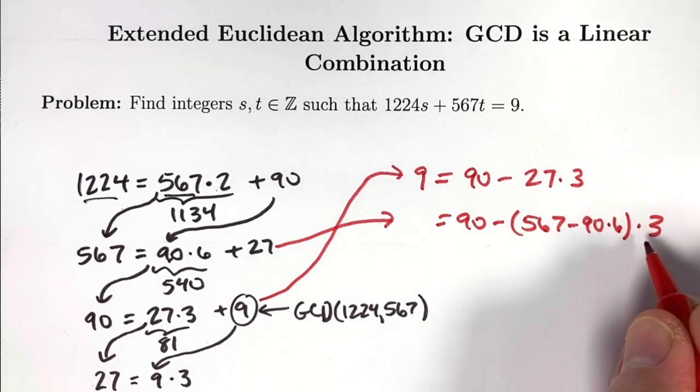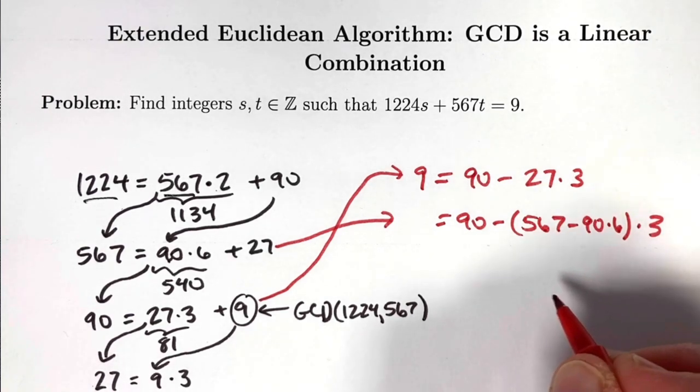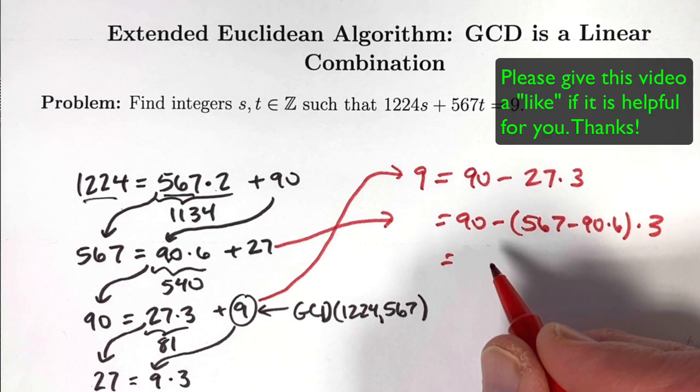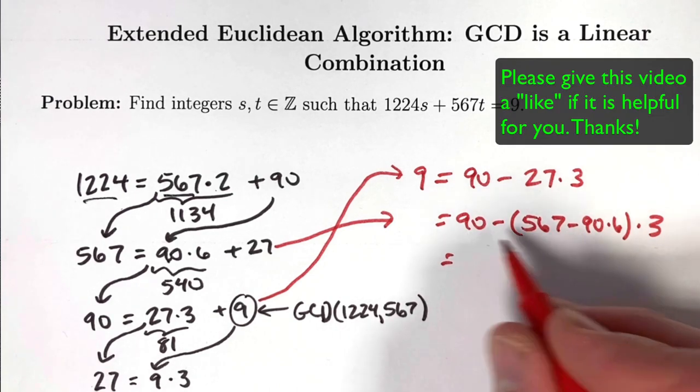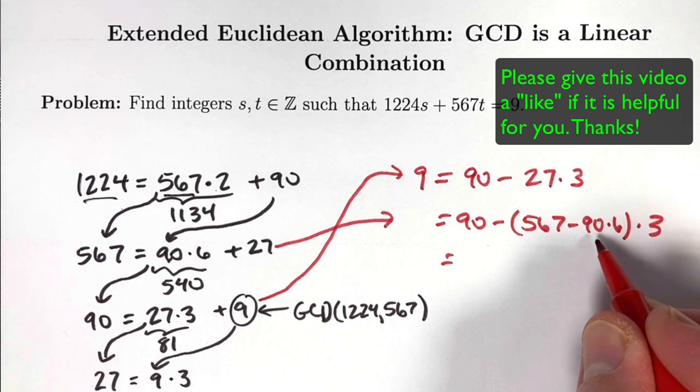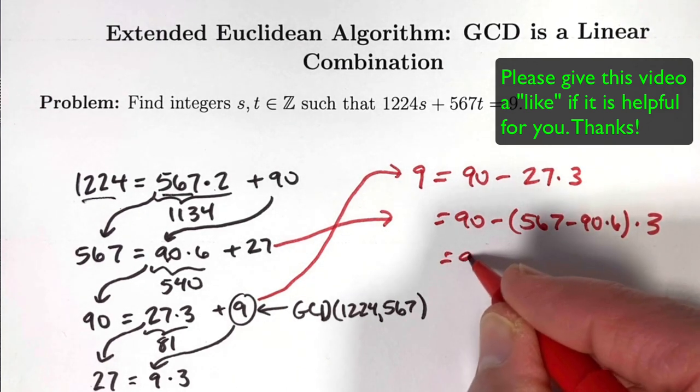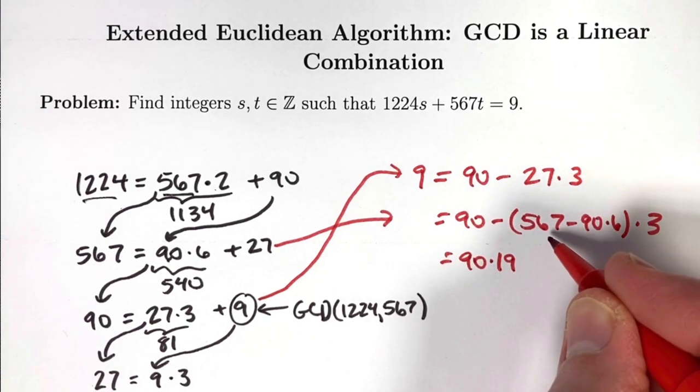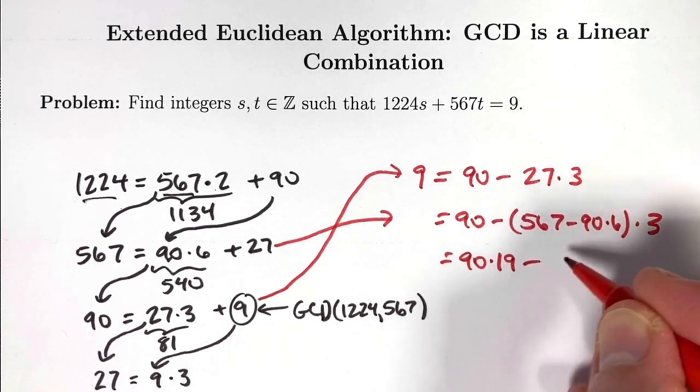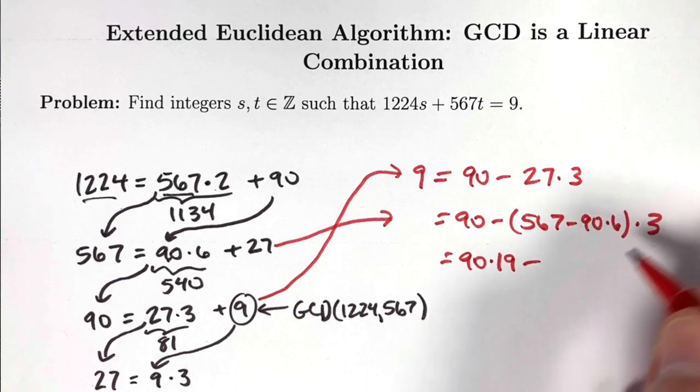Simplify. Distribute this 3 through the parentheses and re-expand. The terms involving 90 will be 90 and also plus 90 times, ultimately, 18, 6 times 3, giving us 90 times 19. And the terms involving 567 will be just the minus 567 times 3.